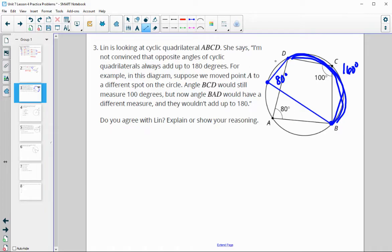If A stays anywhere over here, it will start at D and end at B. So it will be half of 180. So it should always stay 80. So I disagree with Lynn.